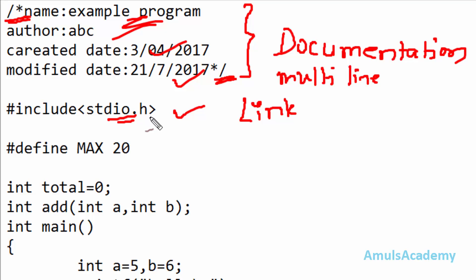That is, input and output functions are defined in this header file. Here we are telling the compiler to link the input-output functions to this header file.